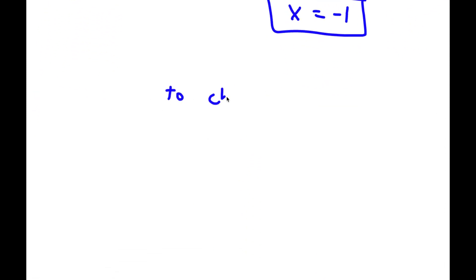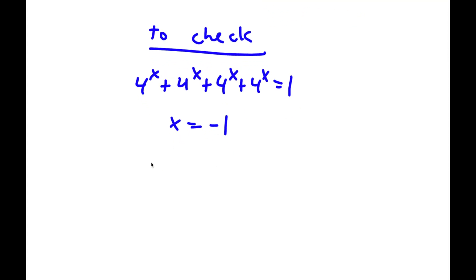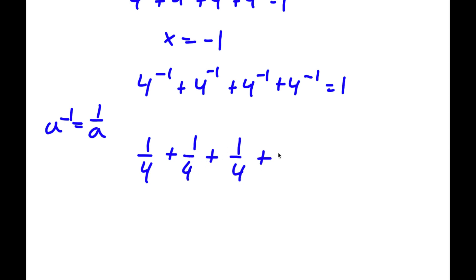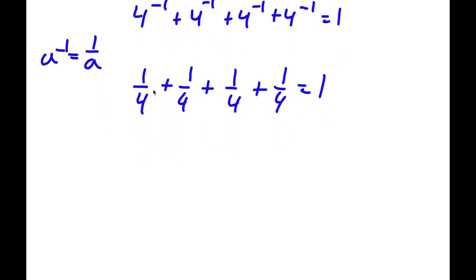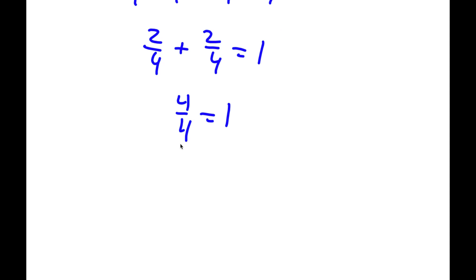Now to check: substituting x equals negative 1, I have 4 to the power of negative 1 plus 4 to the power of negative 1 plus 4 to the power of negative 1 plus 4 to the power of negative 1 equals 1. Since a to the power of negative 1 equals 1 over a, each term is 1 over 4. So 1/4 plus 1/4 equals 2/4, plus 1/4 plus 1/4 equals another 2/4, and 2/4 plus 2/4 equals 4/4, which equals 1. So 1 equals 1, confirming our solution is correct.